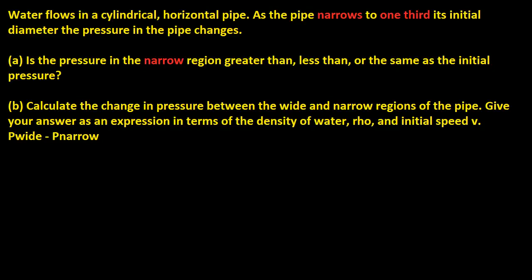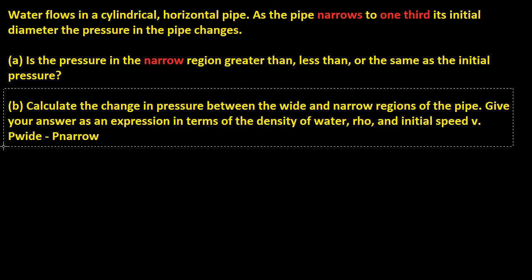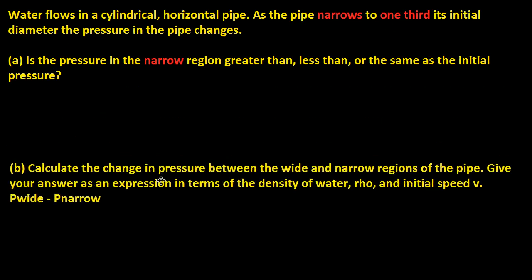Hey, welcome to another explanation of a WebAssign problem. This time we have water that's flowing in a cylindrical horizontal pipe. As the pipe narrows to one-third its initial diameter, the pressure in the pipe changes.